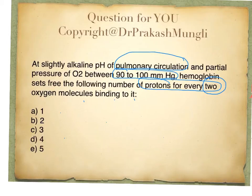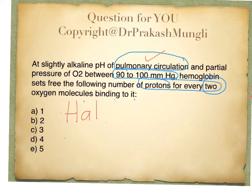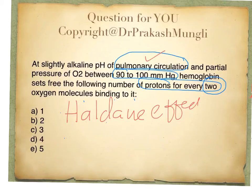The deoxygenated hemoglobin bound with two protons returns to the lungs — the pulmonary circulation. Whatever happens to hemoglobin in the pulmonary circulation is called the Haldane effect. The Haldane effect is seen in the lungs.